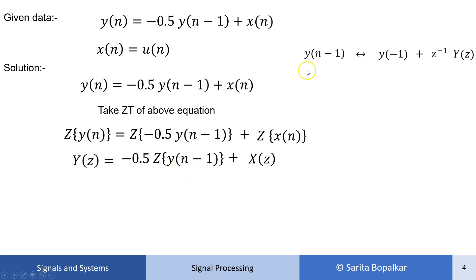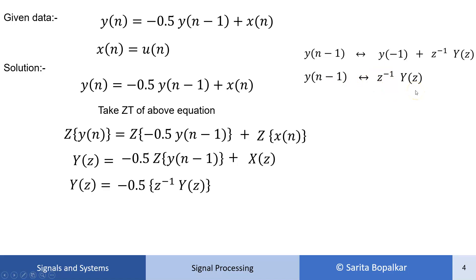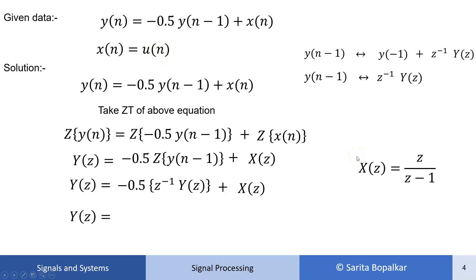The Z-transform of y(n-1): generally with initial conditions it is y(-1) + z⁻¹·Y(z), but since no initial condition is given that term is zero. So the Z-transform of y(n-1) is z⁻¹·Y(z). Substituting, Y(z) = -0.5·z⁻¹·Y(z) + X(z), and since x(n) = u(n), X(z) = z/(z-1).